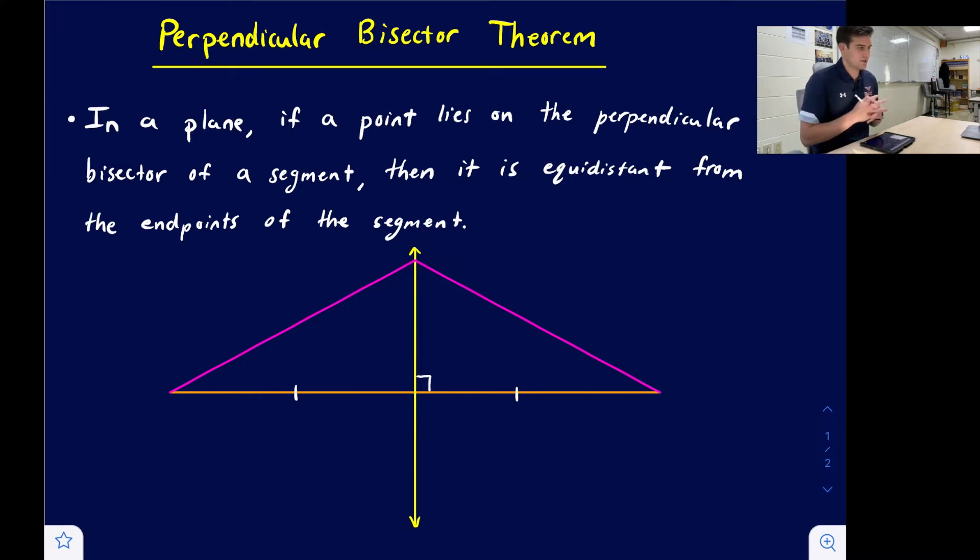We've talked about perpendicular bisectors before in previous videos. We've even made a video about how to construct a perpendicular bisector, so if you want to check that out you can look in the top right hand corner. For this theorem, it says in a plane if a point lies on the perpendicular bisector of a segment, then it is equidistant from the endpoints of the segment.